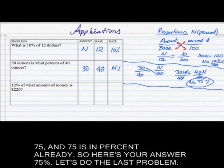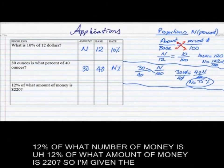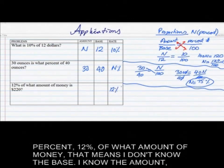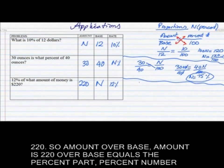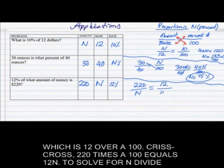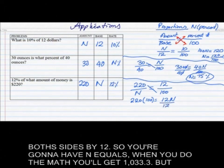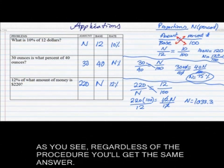Last problem: 12% of what amount of money is 220? The percent is 12, the base is unknown, the amount is 220. So: 220/n = 12/100. Crisscross: 220 × 100 = 12n. Divide both sides by 12: n = 1033.3. As you can see, regardless of the method, you get the same answer.